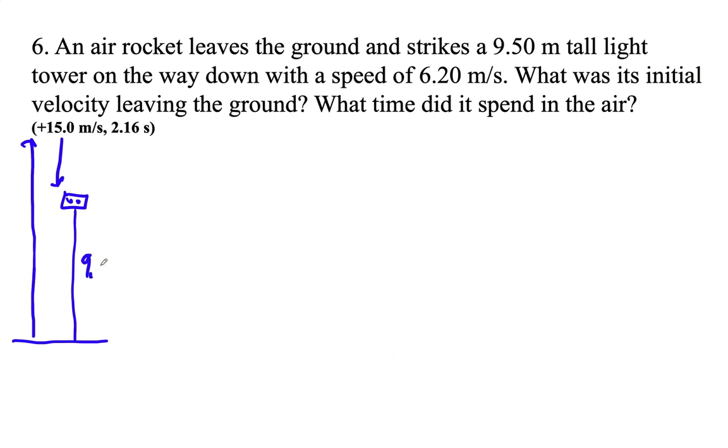Somehow it comes down on top of the light tower. And this is 9.50 meters, and it strikes this with a speed. Notice I say speed, so I don't show that that's actually a negative number. If it's going down at 6.2, we're going to make that negative, so the final velocity is negative 6.2 meters per second. The displacement from the ground to here is going to be positive 9.5. So let's set it up, we'll go from ground to the light tower.